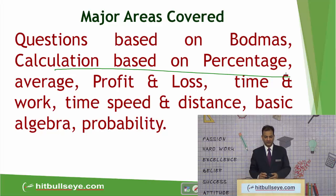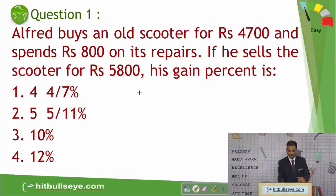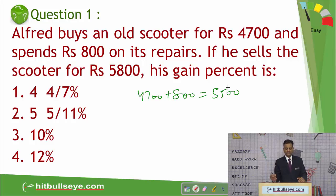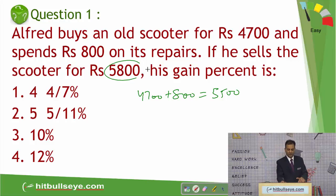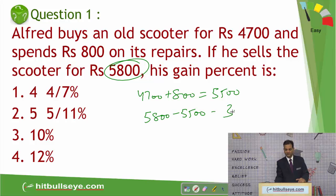Now let's see the questions of the quant area. The first question says: Alfred buys a scooter for ₹4700 and spends ₹800 on its repair. So total money spent is 4700 plus 800 equals ₹5500. If he sells the scooter for ₹5800, what is his gain percentage? The profit is selling price minus cost price: 5800 minus 5500 equals ₹300.